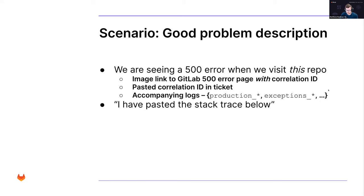A good problem description is: 'we are seeing a 500 error when we visit this repo.' Sometimes they include an image link to the error, but without the correlation ID it's not very useful. If they include a timestamp, that's better. A correlation ID is good; pasting it in the ticket is even better. If they include accompanying logs and the full stack trace when they submit the ticket, that's a great start — we can't debug a problem unless we know what it is.